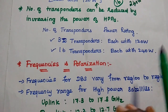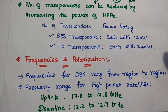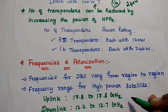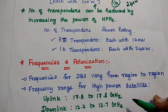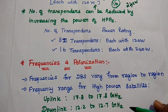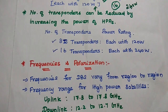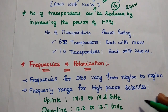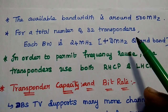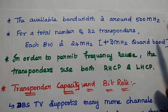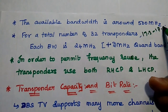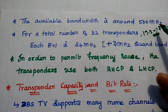Next is frequencies and polarization. Frequencies for DBS vary from region to region. The frequency range for high power satellites: uplink is 17.3 to 17.8 GHz, and downlink is 12.2 to 12.7 GHz. Similarly, we can have frequency ranges for medium power and low power satellites. The average bandwidth is around 500 MHz, since for uplink the range is 17.3 to 17.8 GHz — a difference of 500 MHz.